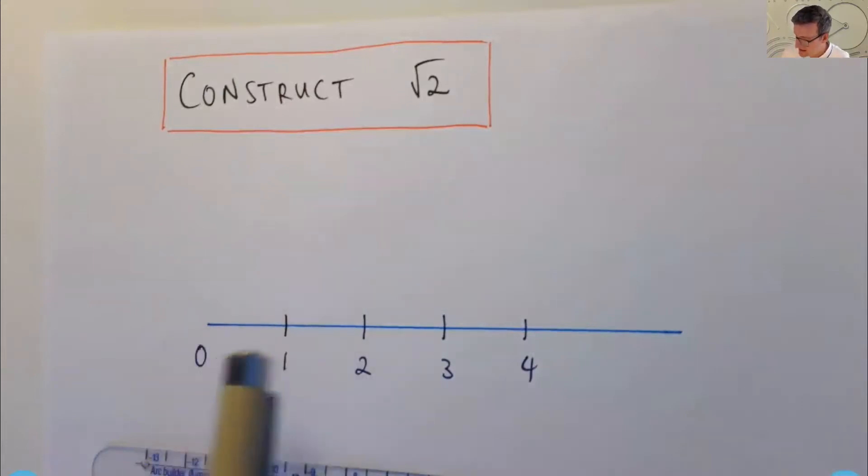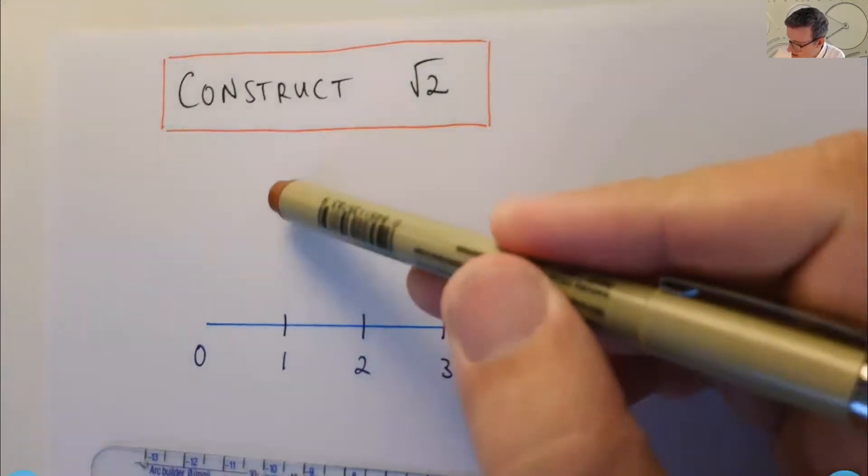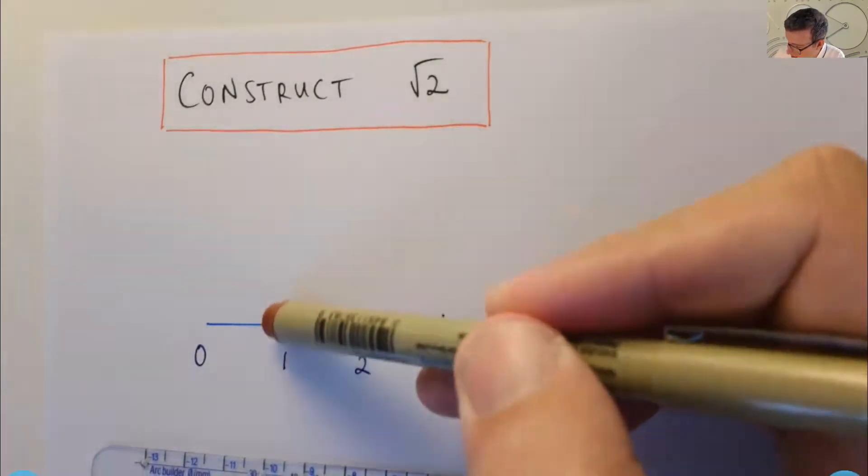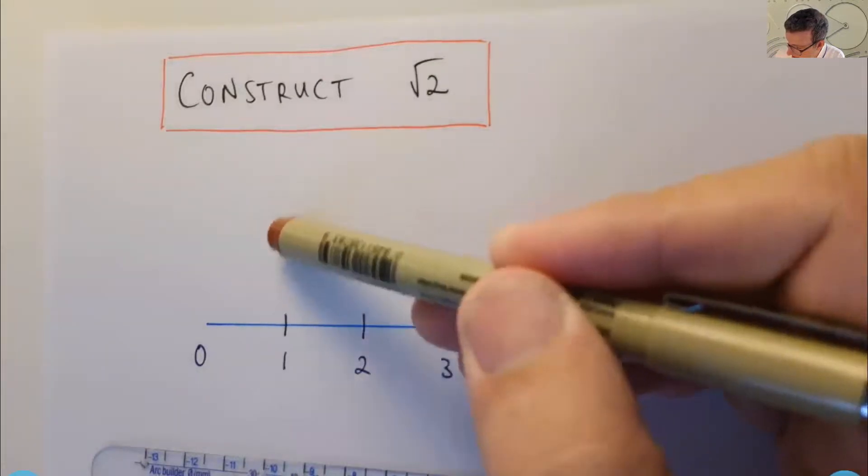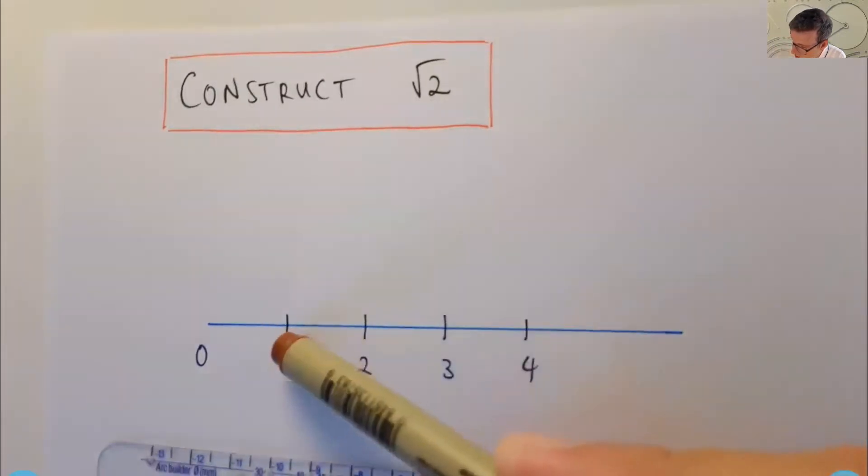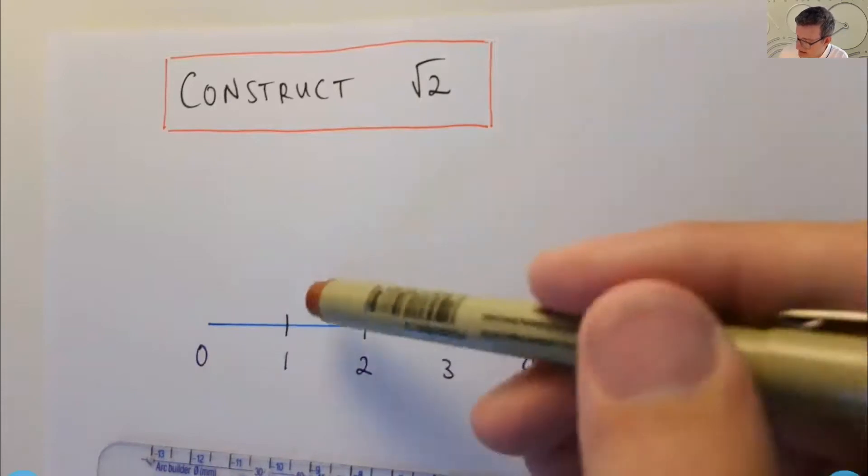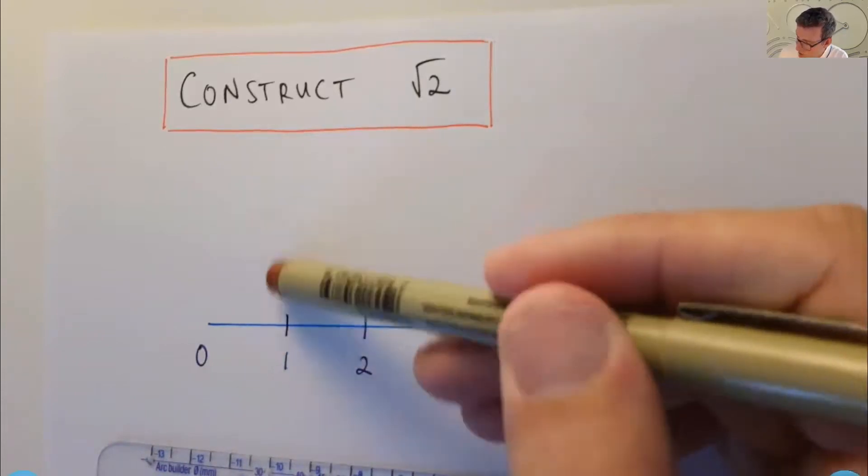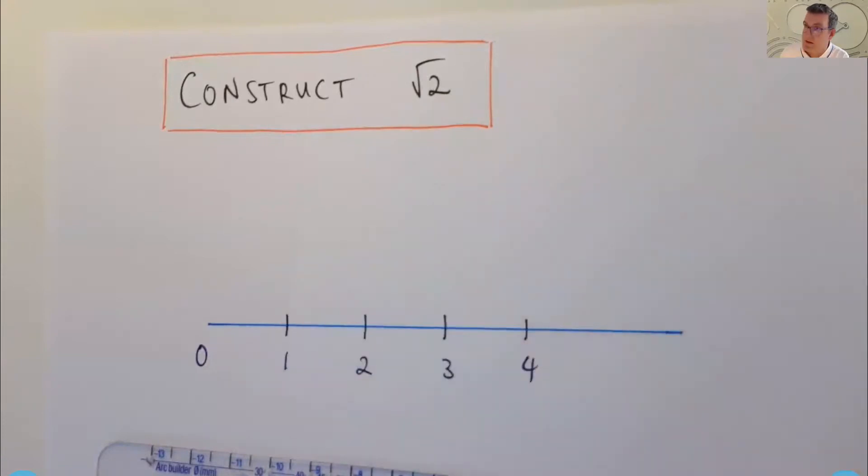So how do I actually get root two out of this? Well, I'm glad you asked. So let me show you how to do it. The idea is to drop or construct a line segment to one that is normal or perpendicular to this line segment. And then if you can go out one unit in the vertical direction, then you've got two sides of a triangle, and then you just join them up with the hypotenuse and the hypotenuse will have length root two.